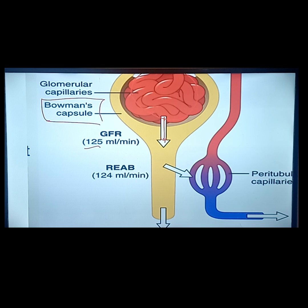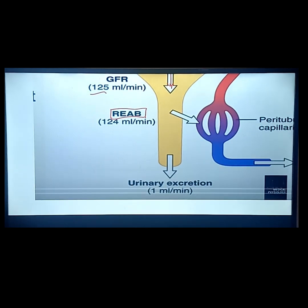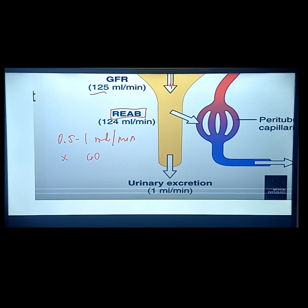From Bowman's capsule the filtrate goes into the proximal tubules, where reabsorption takes place at a rate of around 124 to 124.5 ml per minute, which results in urinary excretion of around 0.5 to 1 ml per minute. Subtracting GFR minus reabsorption rate gives 0.5 to 1 ml. That is 0.5 to 1 ml per minute multiplied by 60 minutes, giving you around 30 to 60 ml per hour of urine output — that is our normal urine output per hour.